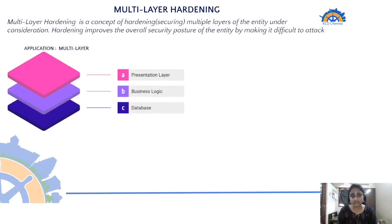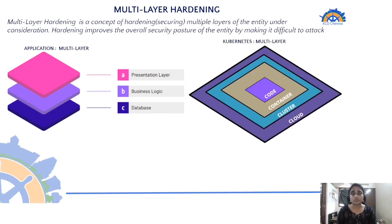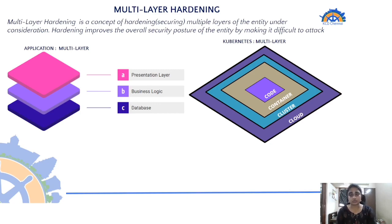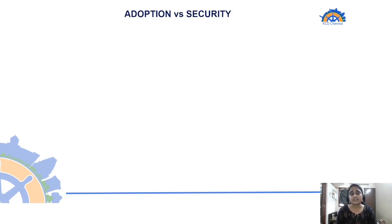Just as an application has multiple layers like presentation, business logic, and database, a Kubernetes cluster has multiple layers: the cloud layer where you run your cluster (on-prem or cloud), the cluster layer with Kubernetes control plane and worker node components, the container layer where application workloads run, and the code layer — the innermost layer and the primary entry point for an attacker.